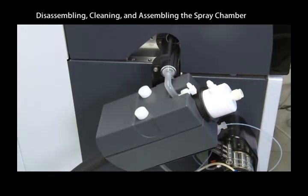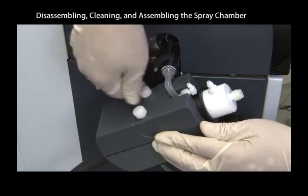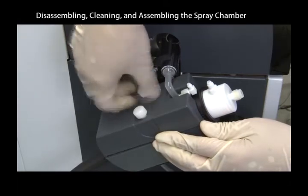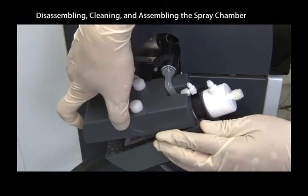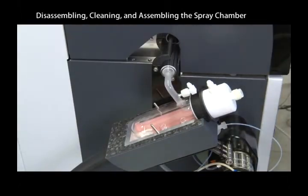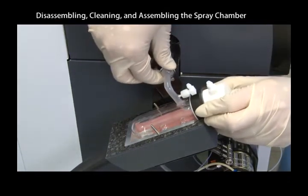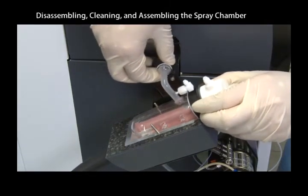Check the gas tube for damage and replace it if necessary. Loosen both screws on the top cover of the chiller and then remove the cover. Lift the spray chamber out of the chiller and then disconnect the drain tube to remove the spray chamber.